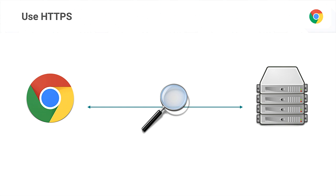First, an attacker should not be able to read the data that goes between the browser and the server. This is a pretty straightforward property — if your user enters a password into your site, an attacker shouldn't be able to see it, or a credit card number, or the content a user is reading on your site. In other words: no snooping. Everything should be private between the browser and the server.